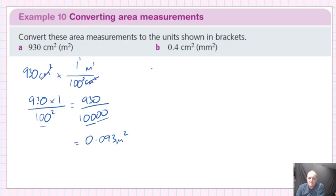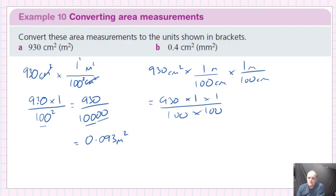Another way to do it would be 930 centimeters squared times by 1 over 100, but because we're squaring, we've got to do it again. So 1 over 100 centimeters, 930 times by 1, times by 1, divided by 100 times 100, you're still going to give us 0.093 square meters.